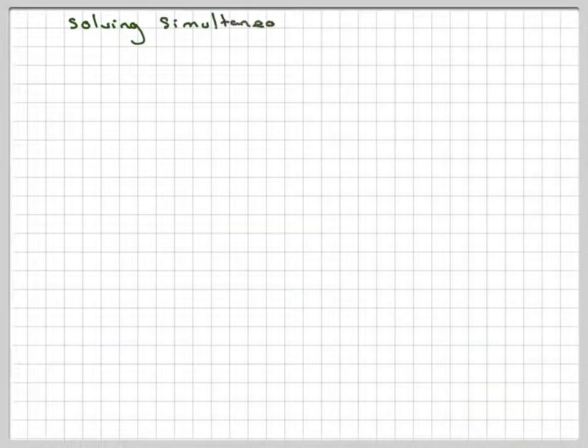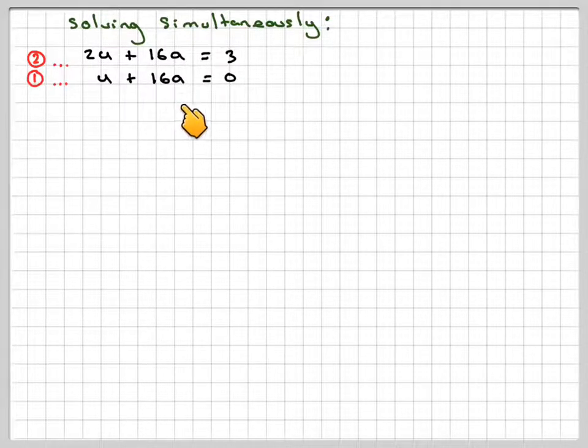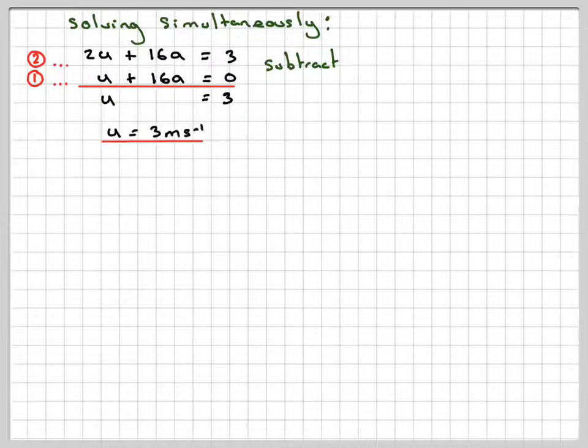Solving simultaneously, you've got 2u, we'll put the number 2 first. 2u plus 16a is equal to 3. And then number 1, u plus 16a is equal to 0. We don't need to do any multiplication. We just do a subtraction. That will give me 2u minus u, which is u. 16a minus 16a, which is nothing. 3 minus 0, which is 3. So the initial speed is 3 metres per second.